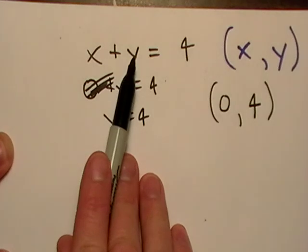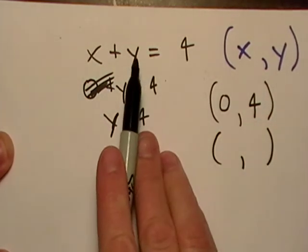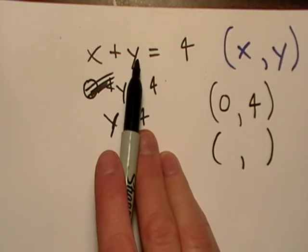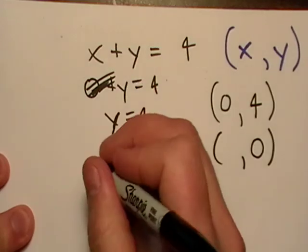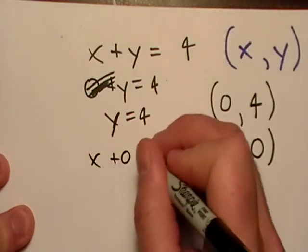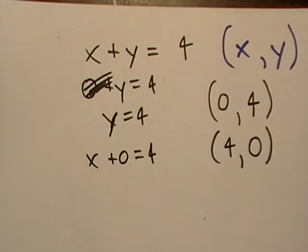I need one more to define this line, so what I'm going to do is now I'm going to pick another value right here, I'm going to do the same thing, I'm going to pick zero and stick it in for y. I'm going to put zero in for y, and we get x plus zero equals 4, well, this will just mean that x is equal to 4.